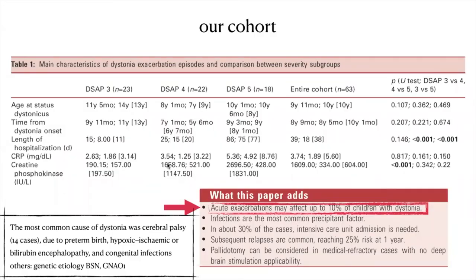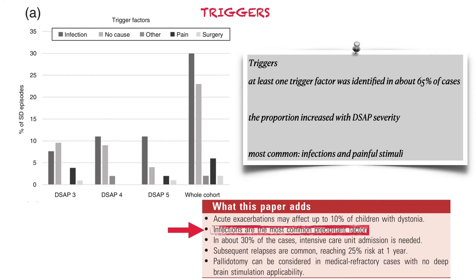We observed acute exacerbations in up to 10% of children with dystonia in our cohort. Another important issue in the management of status dystonicus is addressing and treating precipitant or trigger factors. We found at least one trigger factor in 65% of cases, and the proportion of trigger factors increased with the severity of dystonia. Infections — particularly of the upper and lower respiratory tract — and painful stimuli were the most common precipitants.